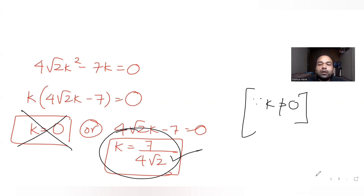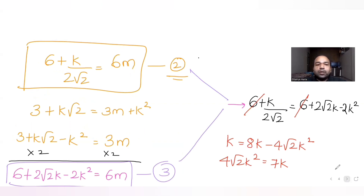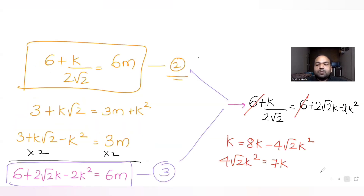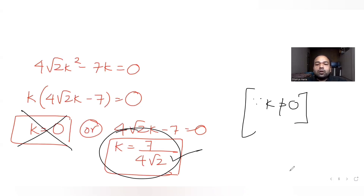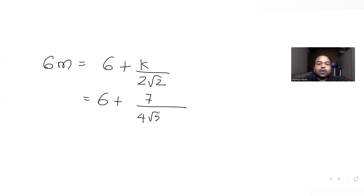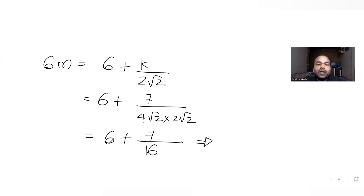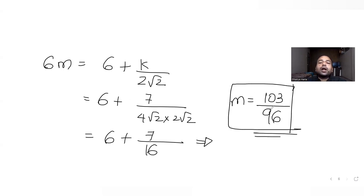Now we find m using equation 2: 6m equals 6 plus k upon 2 root 2, where k is 7 upon 4 root 2. Substituting: 6m equals 6 plus 7 upon (4 root 2 times 2 root 2), which is 6 plus 7/16. So 6m equals 103/16, giving m equal to 103 upon 96.